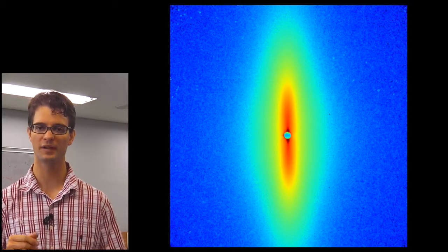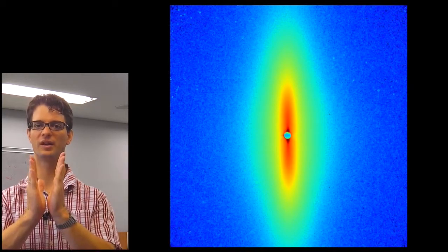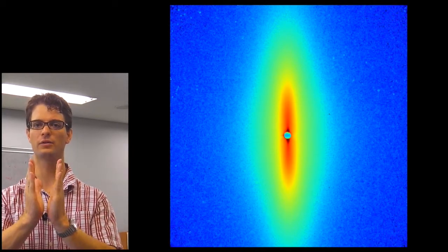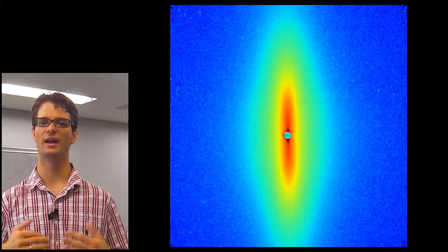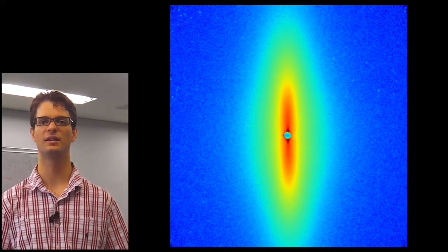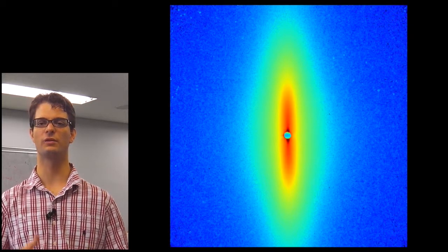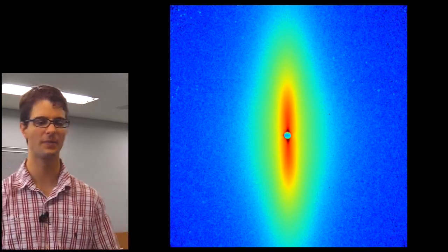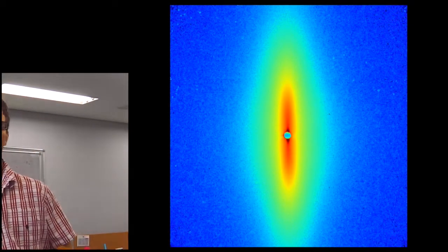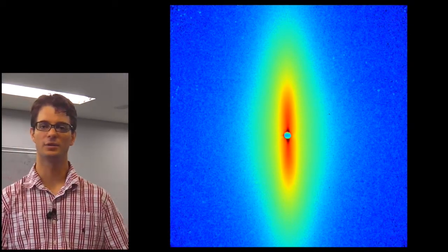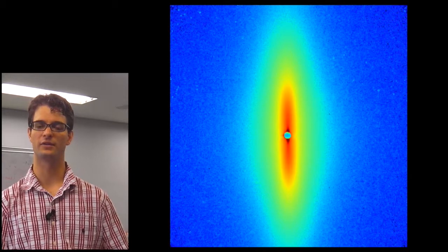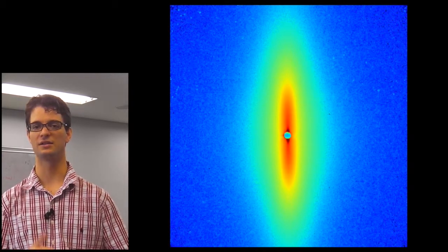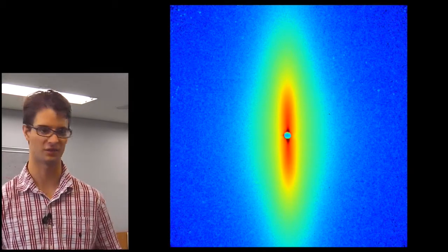What people have done in the past is to take a pi-section out of this and treat that as if it was from isotropic scattering systems. However, this way you lose a lot of information that is in your scattering pattern.